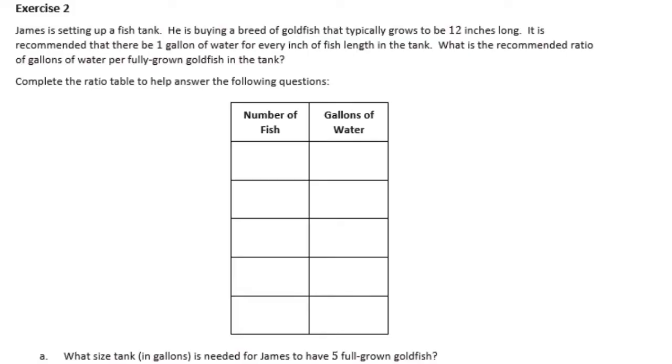Exercise 2. James is setting up a fish tank. He is buying a breed of goldfish that typically grows to be 12 inches long. It is recommended that there be 1 gallon of water for every inch of fish length in the tank. What is the recommended ratio of gallons of water per fully grown goldfish in the tank? Complete the ratio table to help you answer the following questions. So he is buying a goldfish that grows to be 12 inches long. It is recommended that there is 1 gallon of water for every inch of fish. So if we have 1 fish then we would need 1 gallon for every inch of fish. So he is getting a fish that is 12 inches long. So if we have 1 gallon equals 1 inch then if you have 12 inches you would need 12 gallons.